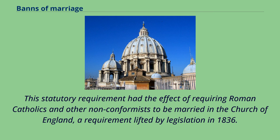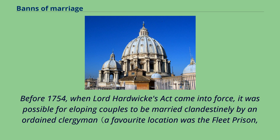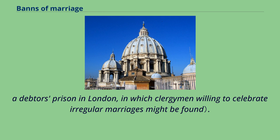This statutory requirement had the effect of requiring Roman Catholics and other non-conformists to be married in the Church of England, a requirement lifted by legislation in 1836. Before 1754, when Lord Hardwick's Act came into force, it was possible for eloping couples to be married clandestinely by an ordained clergyman. A favourite location was the Fleet Prison, a debtor's prison in London, in which clergymen willing to celebrate irregular marriages might be found.